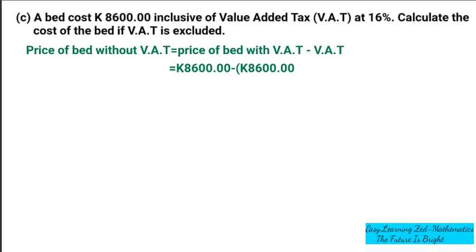You should know that percent means out of 100, so 16 out of 100. I'm going to work first with the expression in the bracket, so the price of bed with VAT, which is 8,600 kwacha, is written first. Then I'm going to evaluate what is in the bracket: 8,600 kwacha multiplied by 16 over 100.